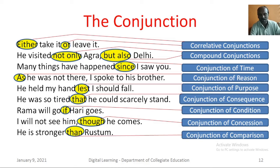He held my hand lest I should fall — here, lest is a conjunction of purpose. He was so tired that he could scarcely stand — here, that is a conjunction of consequence. Rama will go if Hari goes — here, if is a conjunction of condition. I will not see him though he comes — here, though is a conjunction of concession. He is stronger than Rustum — here, than is a conjunction of comparison.